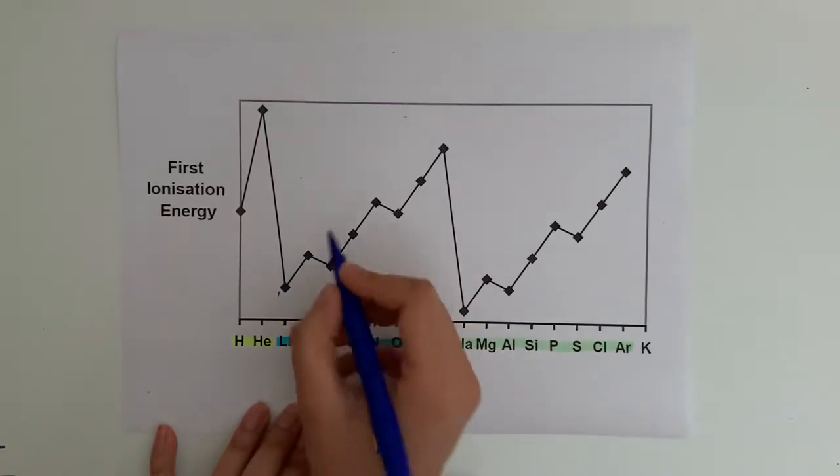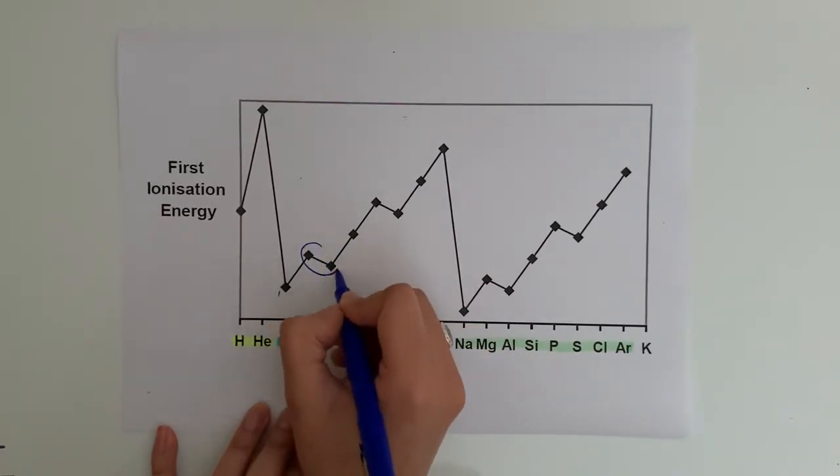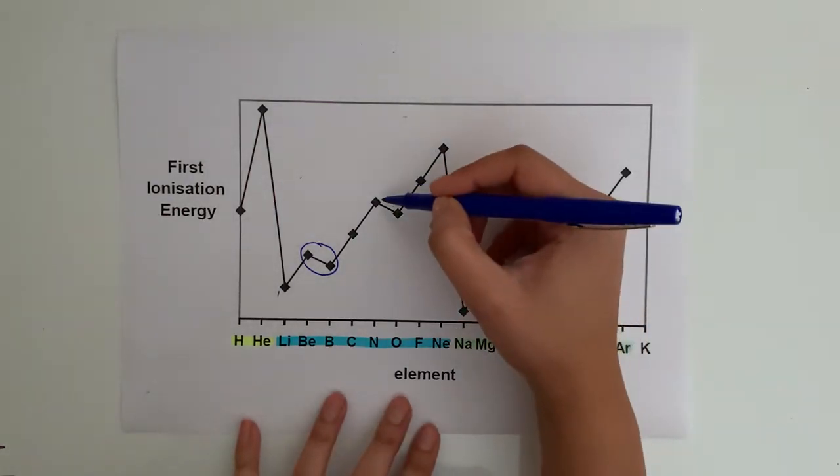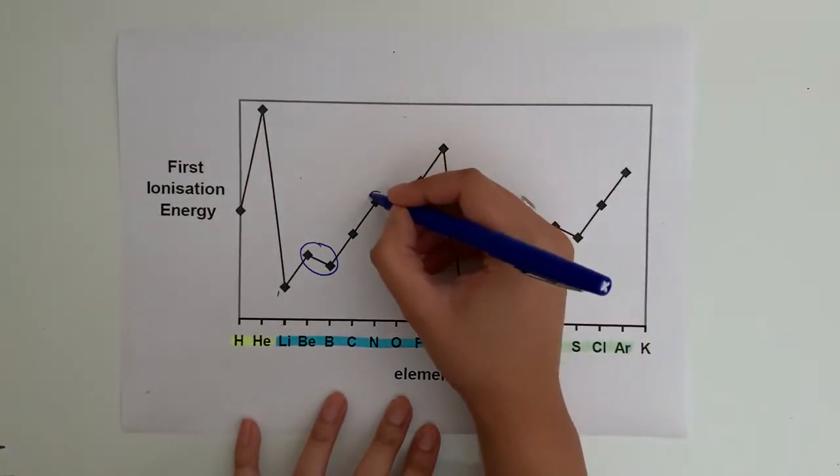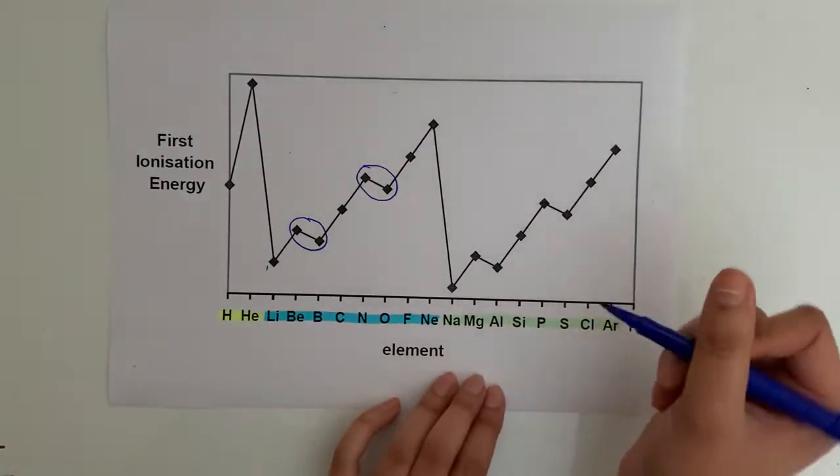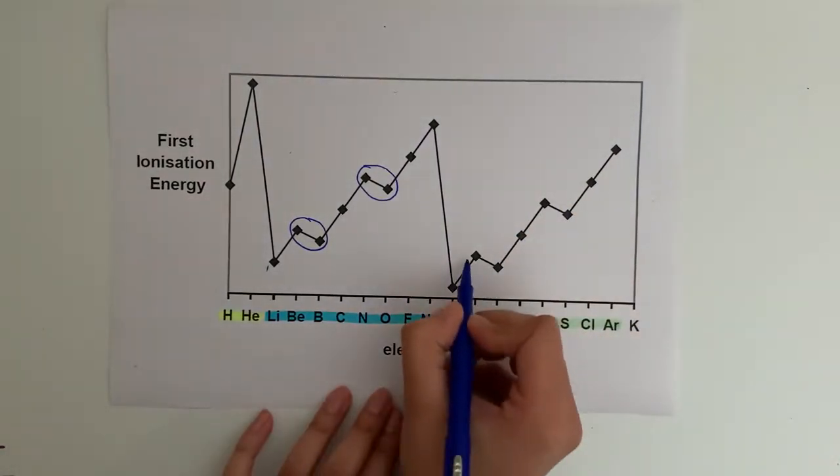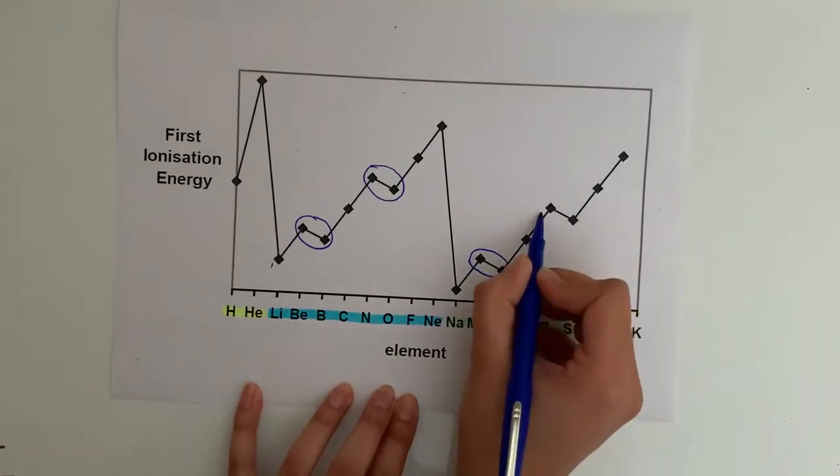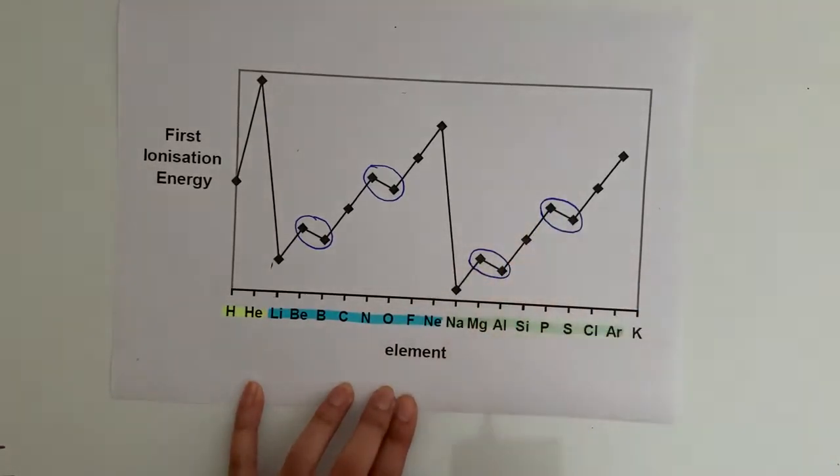As you can see, between beryllium and boron we have this dip over here, so it doesn't follow the trend there. And between nitrogen and oxygen, again we have this dip over here. Same thing happens in period three. Between magnesium and aluminium we have a dip there, and between phosphorus and sulfur we have a dip there.